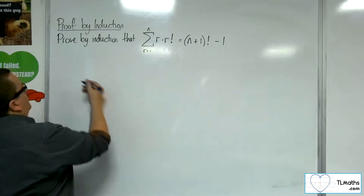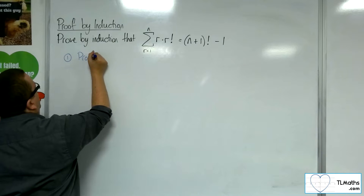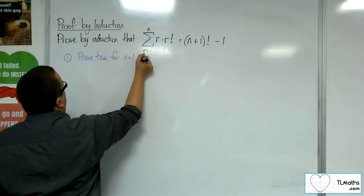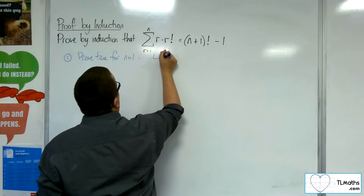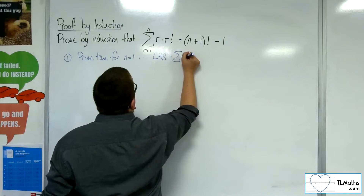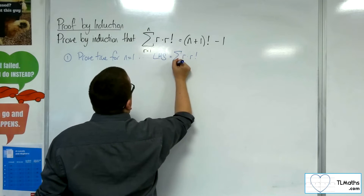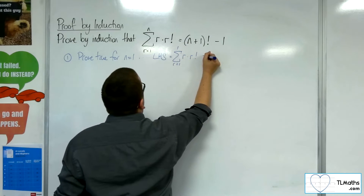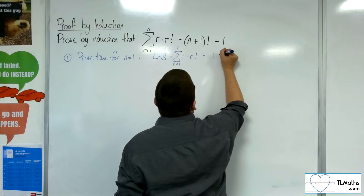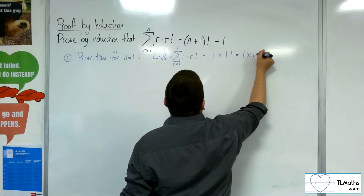Stage 1: we want to prove true for N equals 1. Looking at the left-hand side, we have the sum of R times R factorial from R equals 1 up to 1, which is just 1 times 1 factorial, which is 1 times 1, which equals 1.